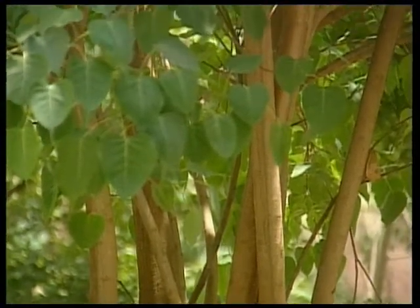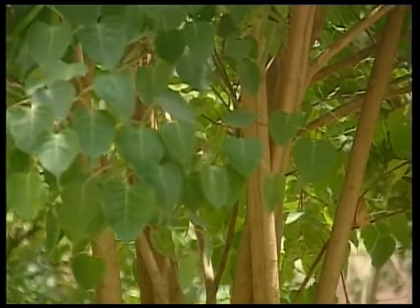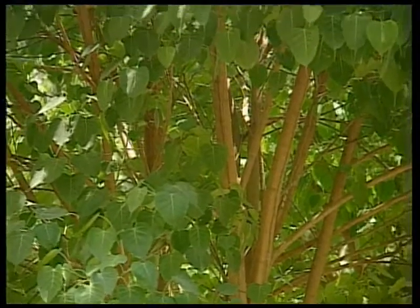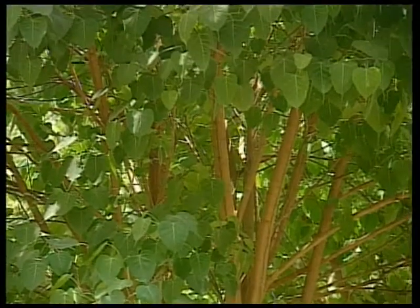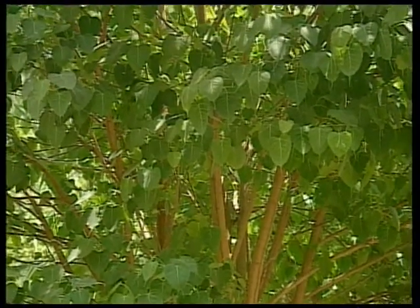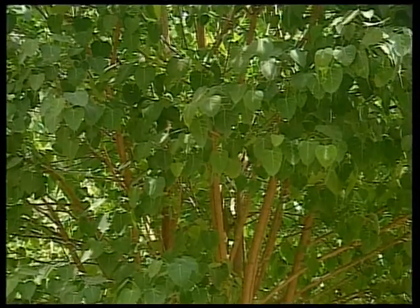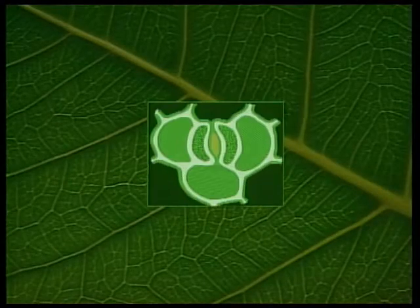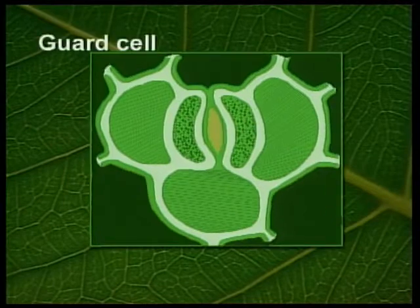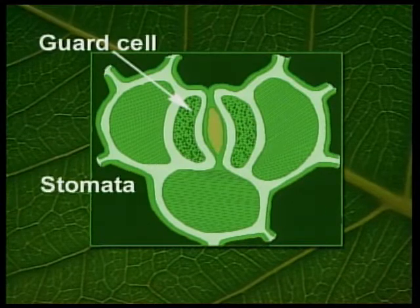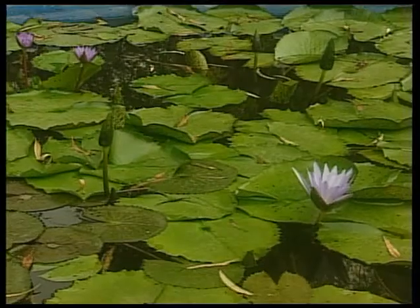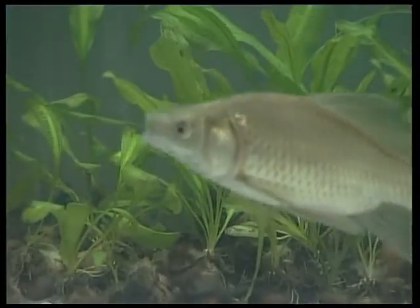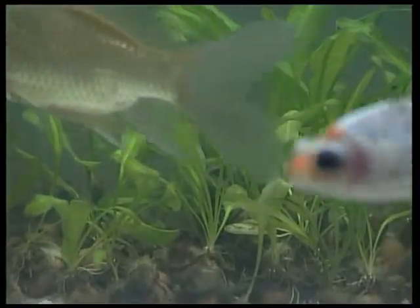Plants breathe through tiny pores called stomata. Stomata are found all over the plant — the leaves, the branches, the roots. The oxygen taken in diffuses in the neighborhood of stomata. What do plants which live partially or completely submerged in water do?